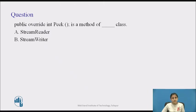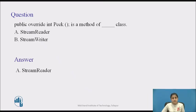Now pause the video and find the answer. 'PublicOverrideIntPeek' is a method of which class? A. StreamReader. B. StreamWriter. The answer is A — StreamReader. Peek is a method of the StreamReader class. It returns the next available character but does not consume it.